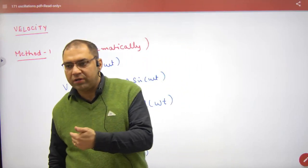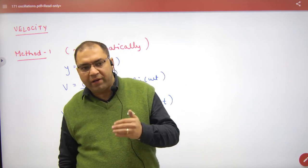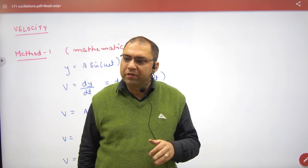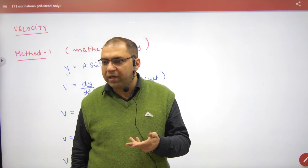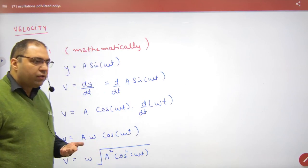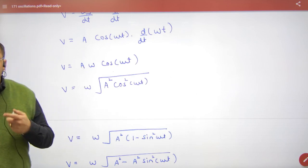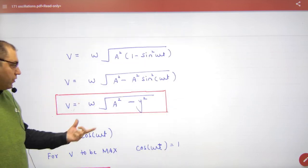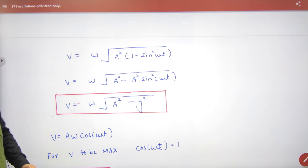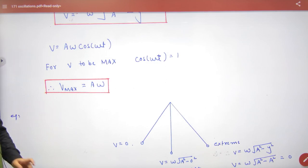Periodic motion is a special category of simple harmonic motion. We have seen that if any body is in simple harmonic motion, the displacement is represented as y = a sin(ωt). Then if any body is in SHM or periodic motion, the velocity representation is a·ω·cos(ωt), or the velocity formula is ω times the square root of (a² minus y²). Maximum velocity formula is a·ω.